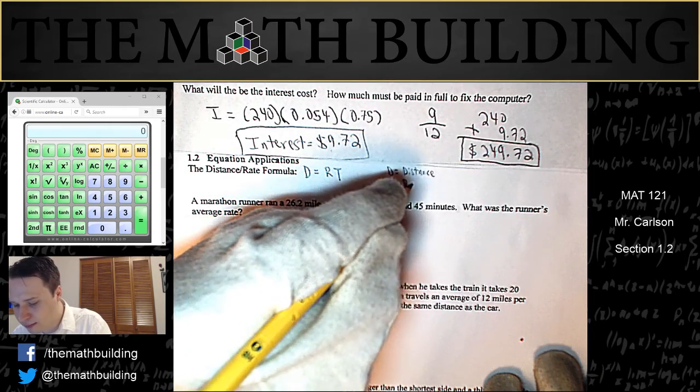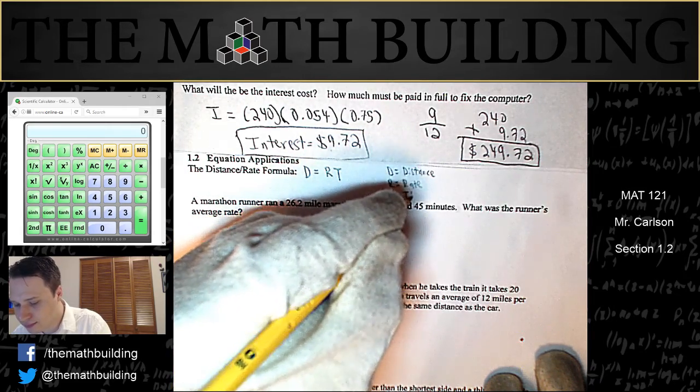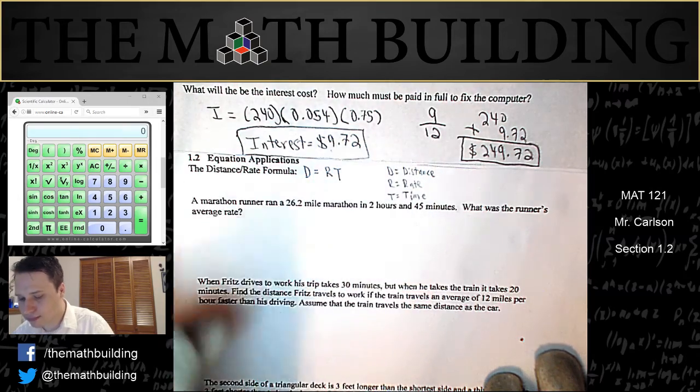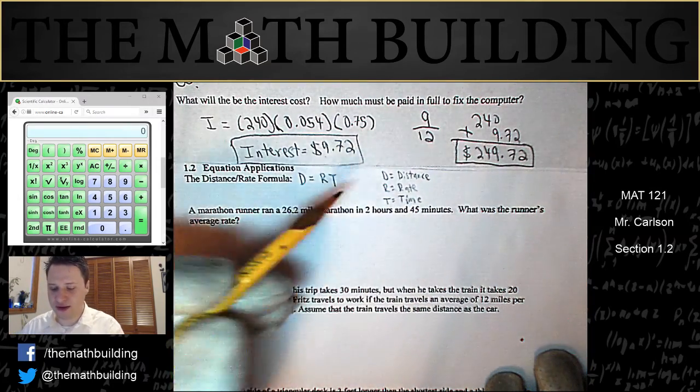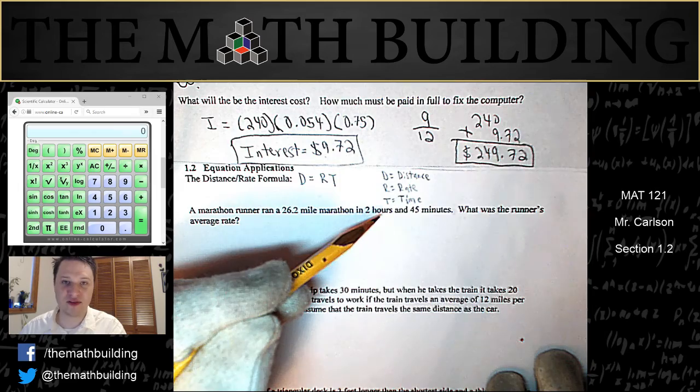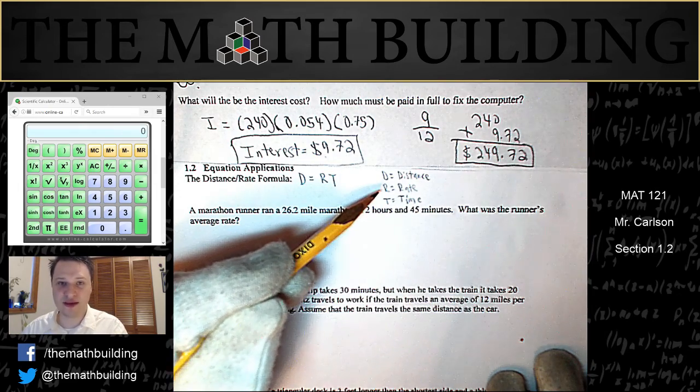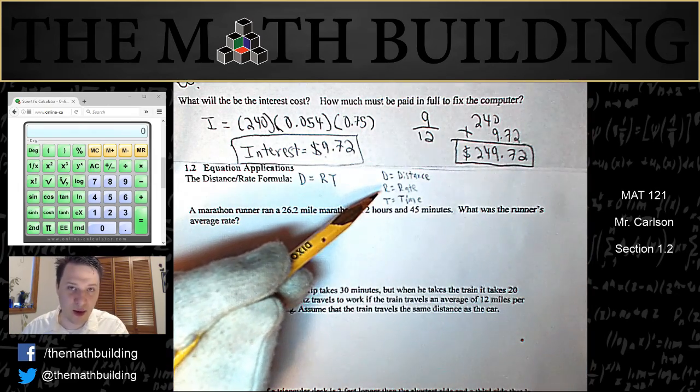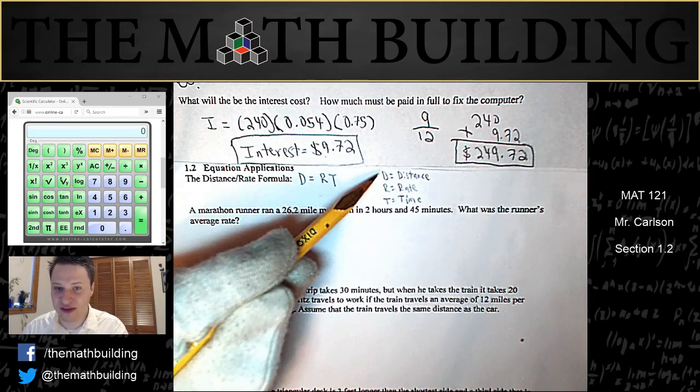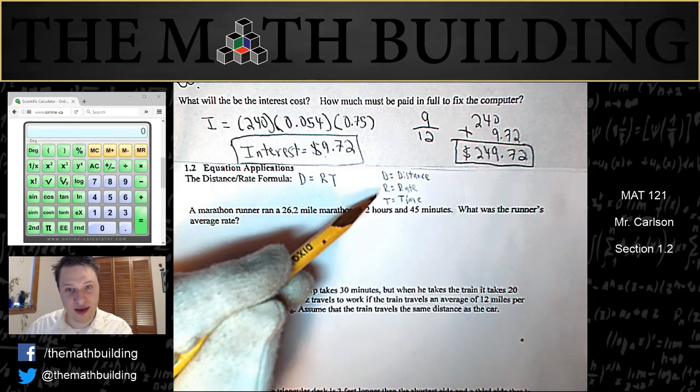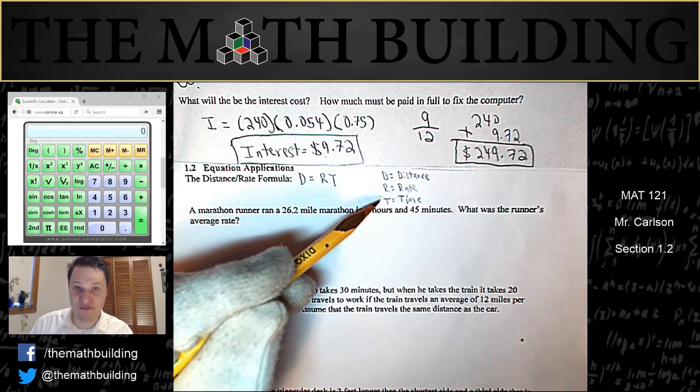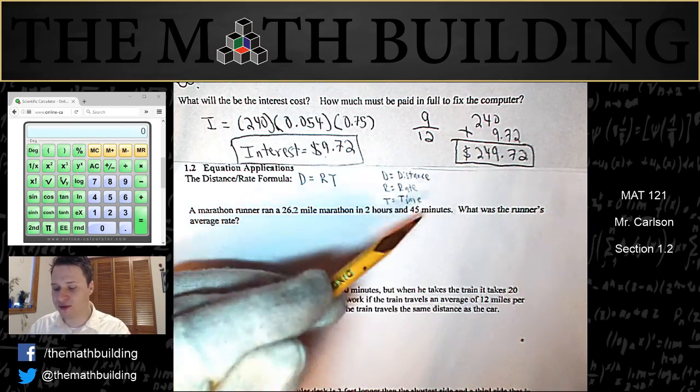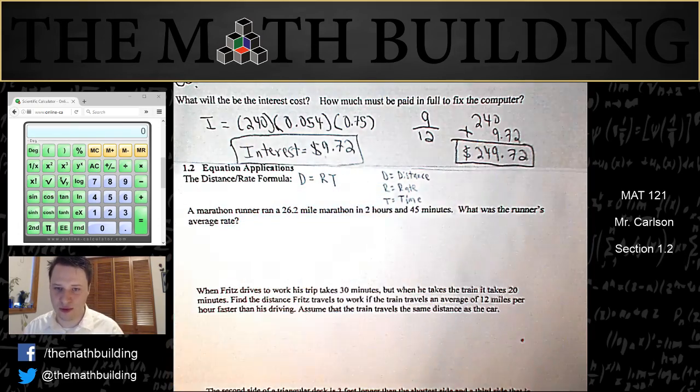So what I mean by that is, if your distance is in miles and your time is in hours, then that means your rate is going to be in miles per hour. Or if your distance was feet and your time was seconds, then that means your rate is going to be feet per second. And so it's important that these all be consistent when you use them.